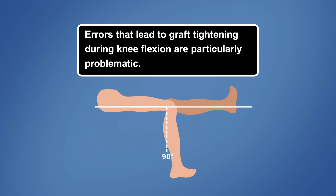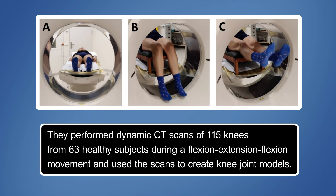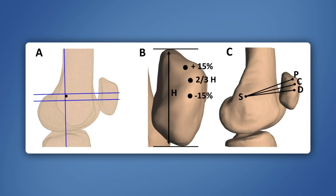In a recent study, researchers sought to understand the physiological strain behavior of the native MPFL to inform better surgical graft placement. To do so, they performed dynamic CT scans of 115 knees from 63 healthy subjects during a flexion-extension-flexion movement and used the scans to create knee-joint models. They measured the MPFL length as the shortest wrapping path from the femoral Schottel's point to three insertion points on the patella's supramedial border: the proximal, central, and distal points.